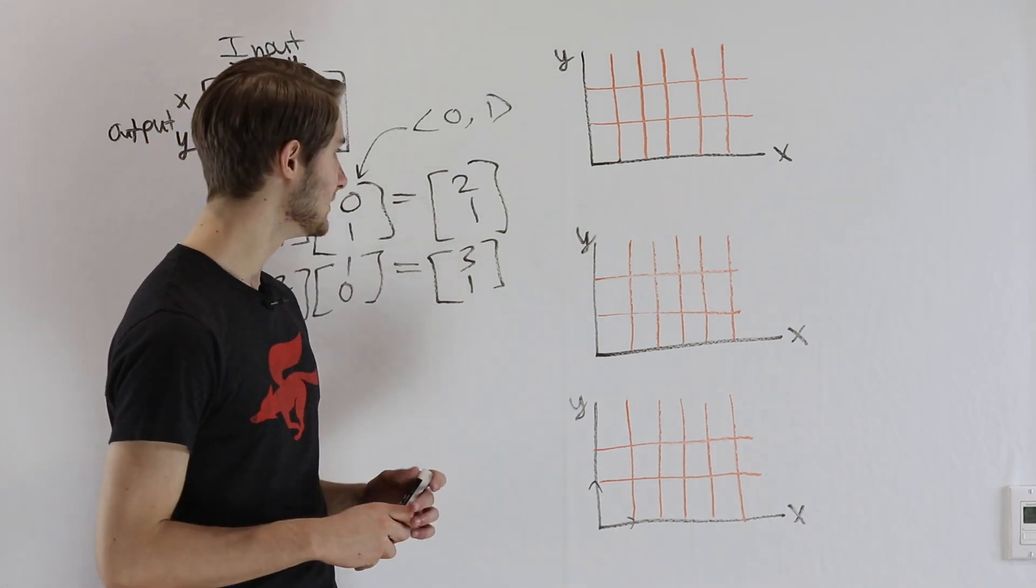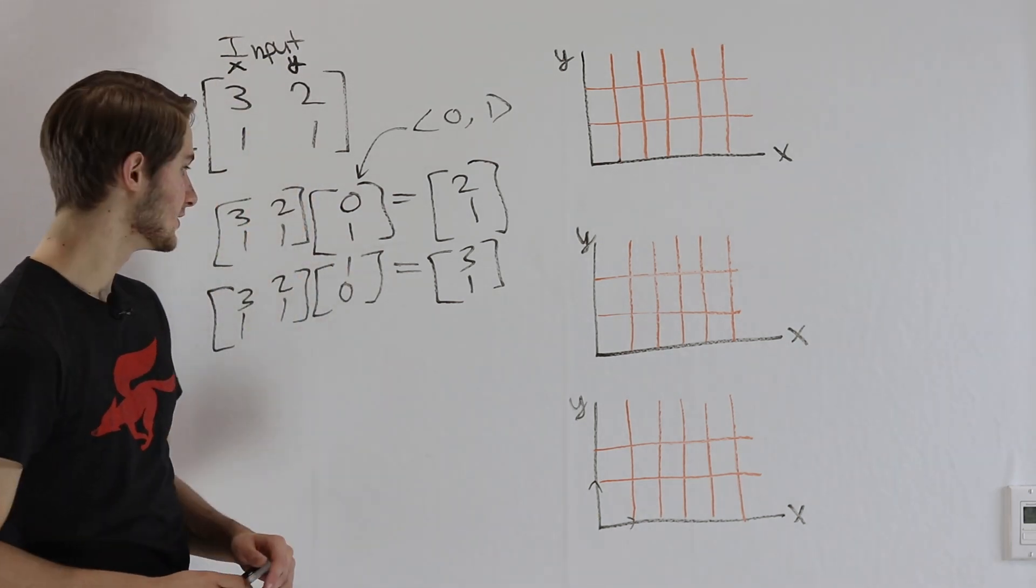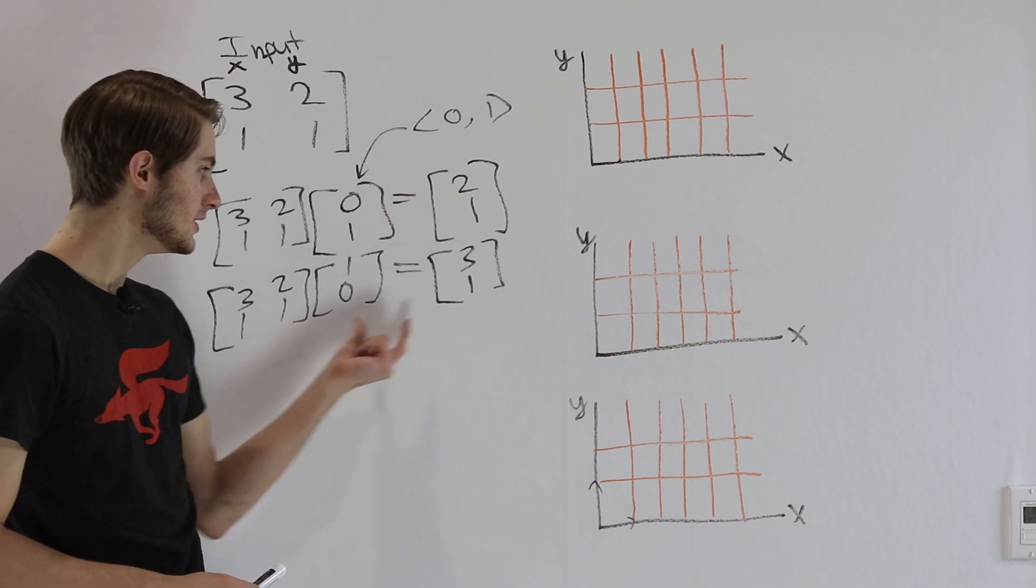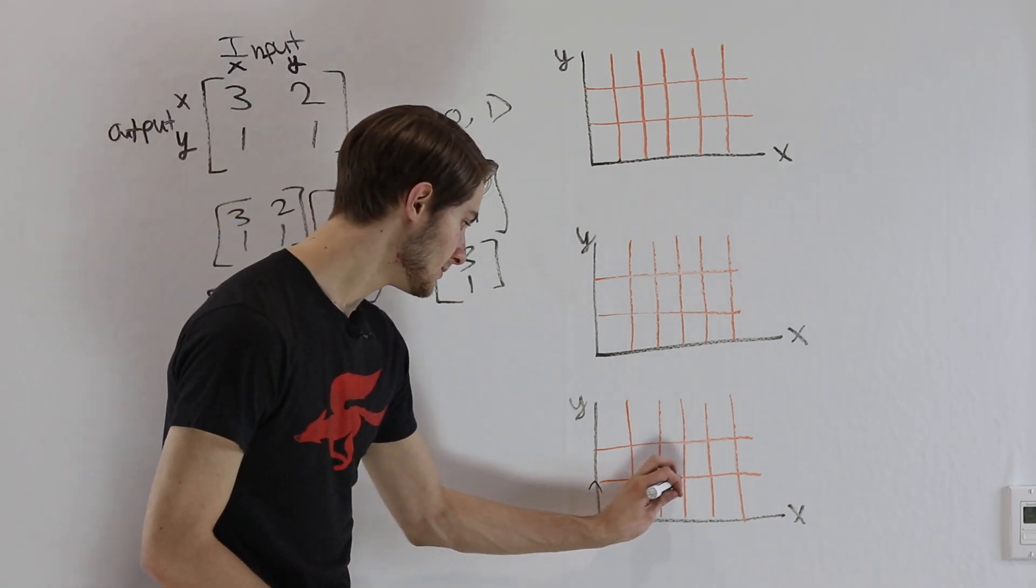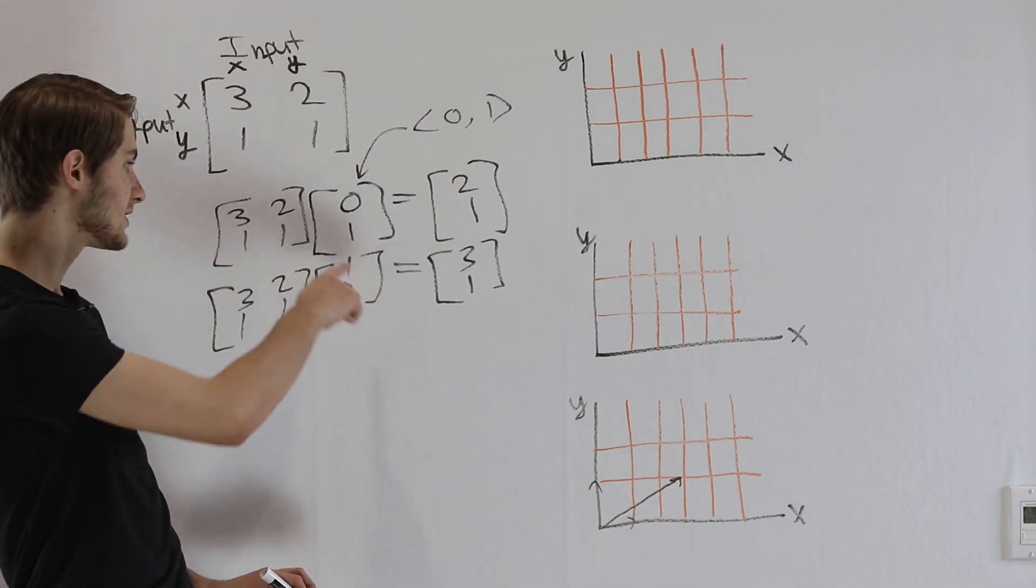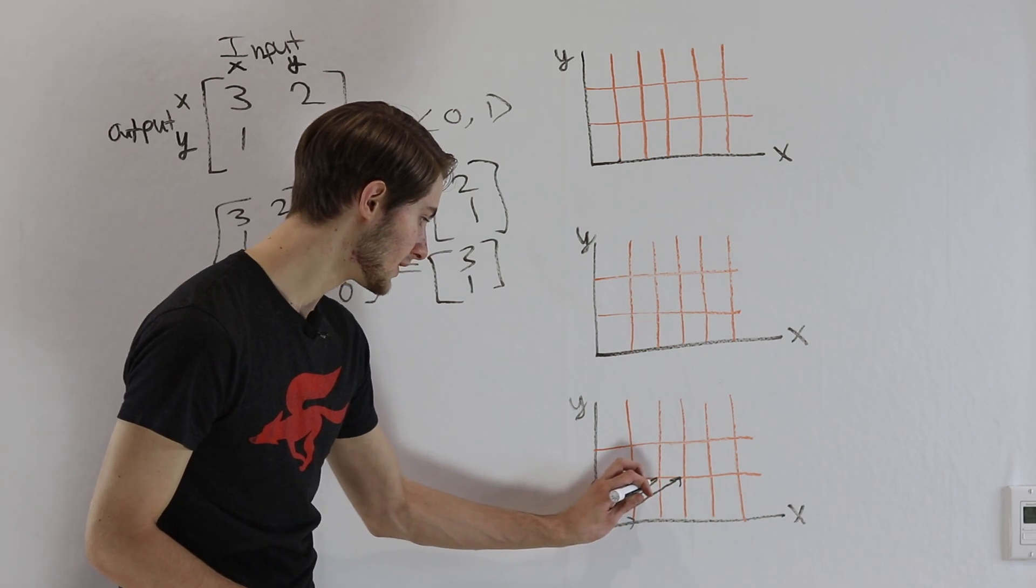Now what would happen if we apply the matrix [3, 2, 1, 1] to these two vectors? Well we know (1, 0) is going to get moved to the vector (3, 1), so it's going to end up right here. And our y vector, (0, 1), is going to get moved to (2, 1), like this.